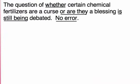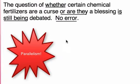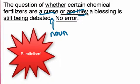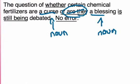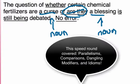Last but not least: the question of whether certain chemical fertilizers are a curse or are they a blessing is still being debated. We have another parallelism error. 'Whether certain chemical fertilizers are a curse' — that's a noun — 'or a blessing.' The error is 'or are they,' which tries to turn it into a question. I hope you did well on these ten errors, and I'll see you in the next speed round.